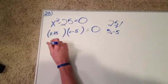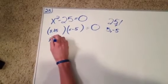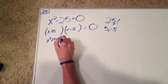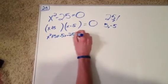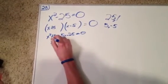To check that, we can go ahead and solve. x squared plus 5x minus 5x minus 25 equals 0, and that does work.